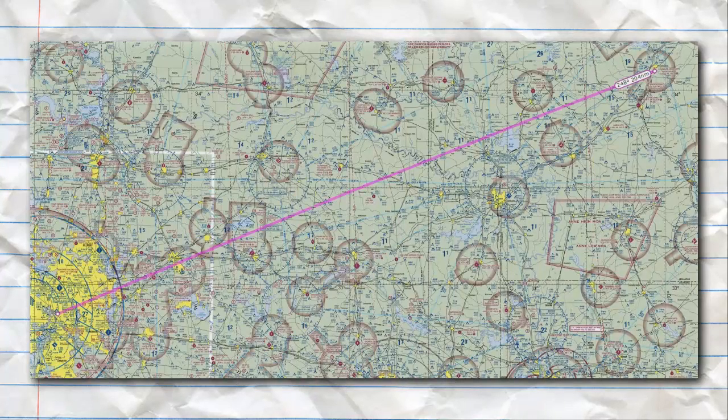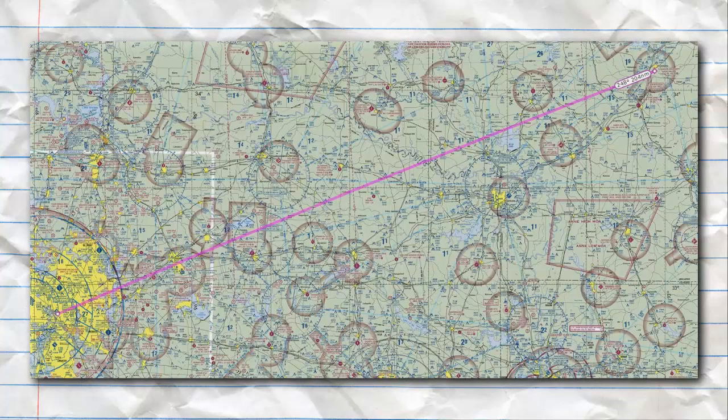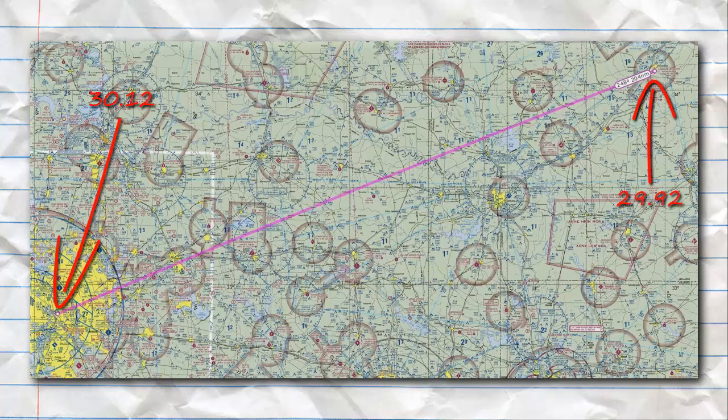So an example of this is, say we departed out of Dallas Love, KDAL, and that gives us an altimeter setting of 30.12. We were going to fly to Arkadelphia, Arkansas, KADF, at an altitude of 5,000 feet.